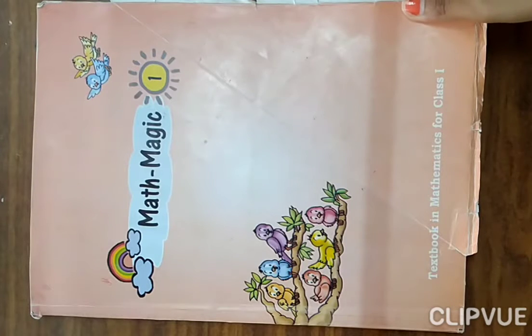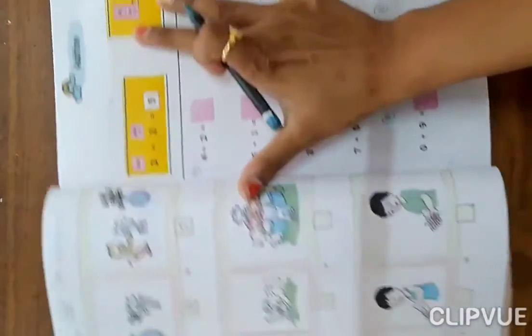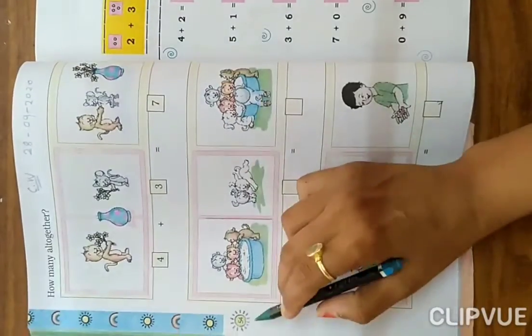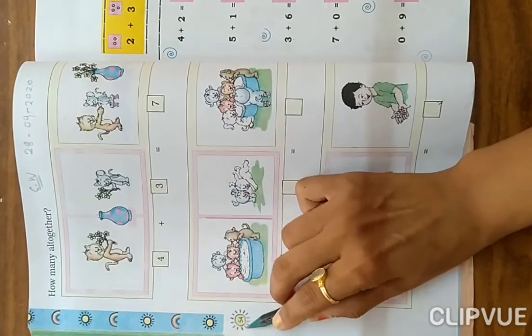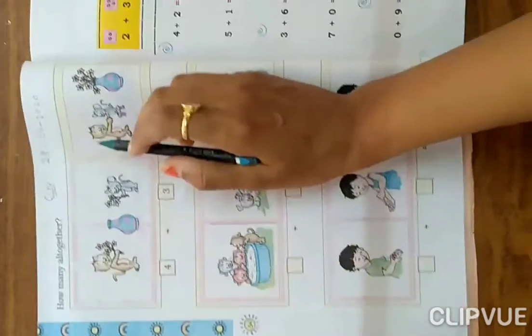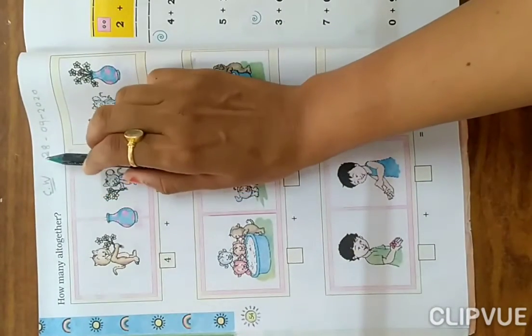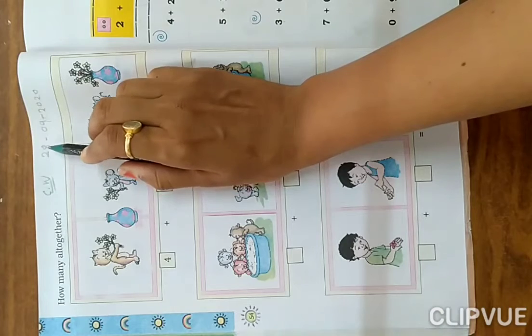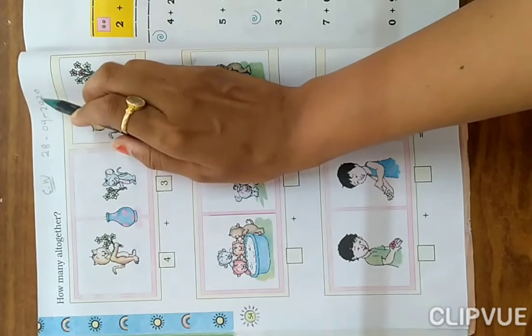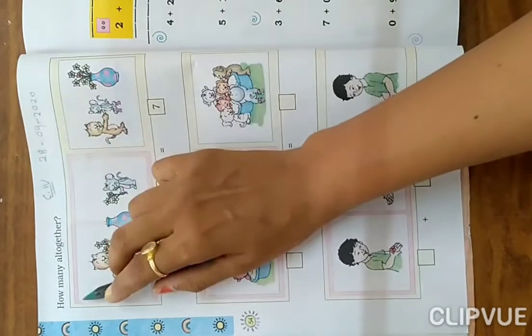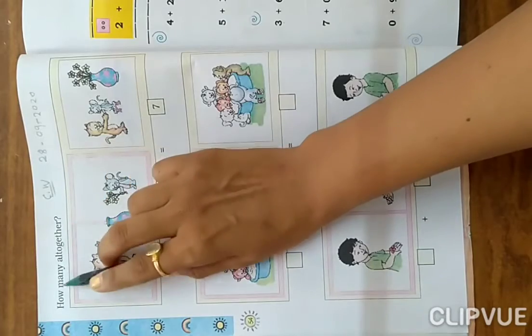Hello students, I'm here for grade one. Take out your maths textbook and page number 54. Page number 54, here write down CW and today's date, 28 September 2020. How many all together?